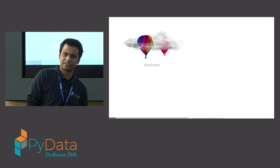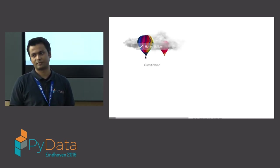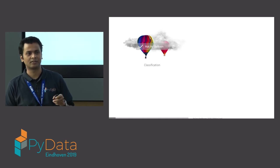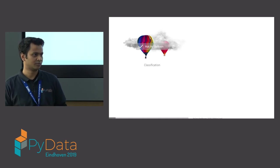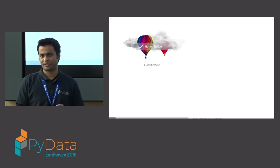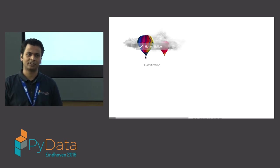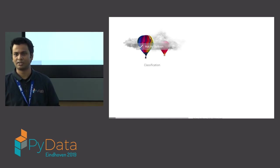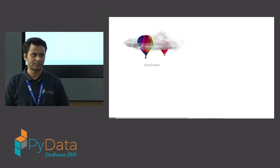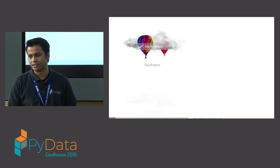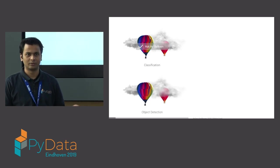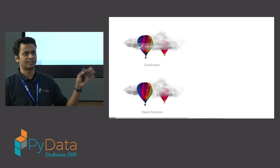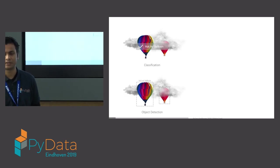Today's talk is about image segmentation. I'm going to cover the typical challenges you can do with images. First, you have classification, where you just want to say that something has a certain element or it doesn't. Then you have object detection, where you are giving coordinates — like, we have a hot air balloon here and this is where the balloons are.